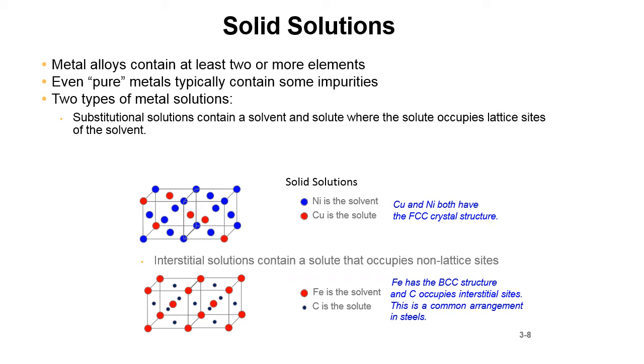Copper and nickel both have an FCC crystal structure. That's why they can swap out. And then iron has a BCC structure and carbon occupies the interstitial sites. This is a common arrangement in steels.